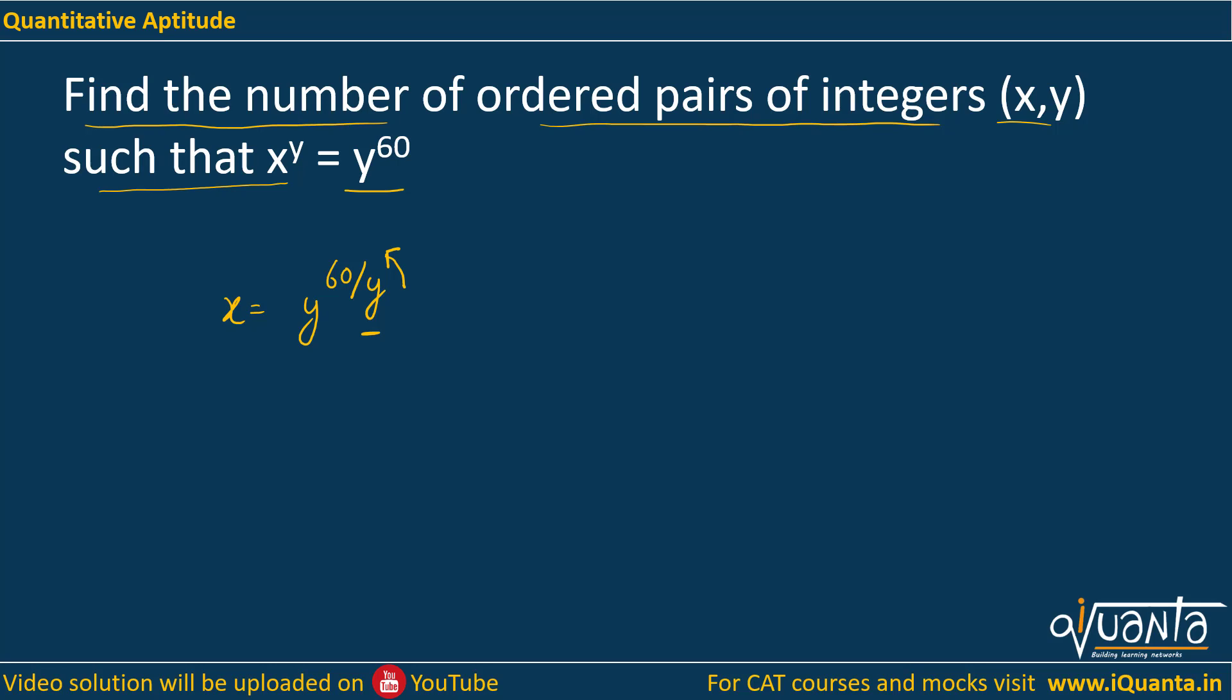So how to find out the factors of 60? We'll write down its prime factorization which is 2 square into 3 into 5. Number of factors will be 2 plus 1, we just add 1 to the powers and multiply them. So 3 into 2 into 2 that means 12. So we are very sure that there will be 12 values of y.